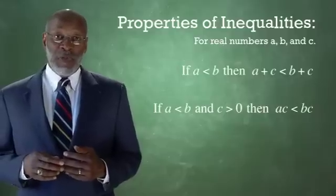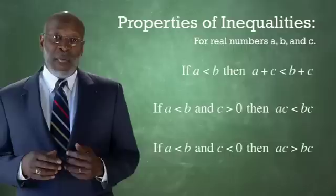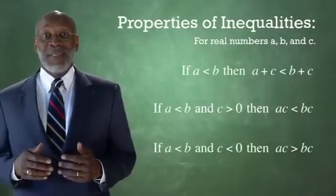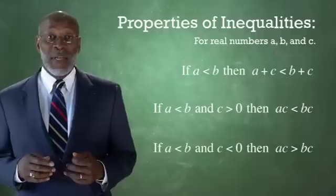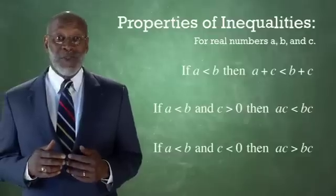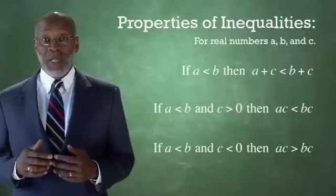In property three, again, if A is less than B, and C is less than zero, that is, if C is a negative number, then A times C is greater than B times C.